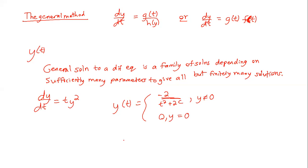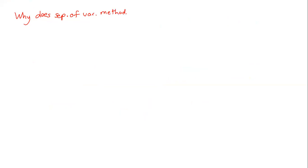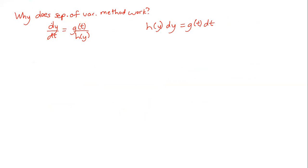You can also use a definite integral instead of an indefinite integral when you have data. Now let's address why the separation of variables method works, because some of the steps look questionable. It's fine to write the differential equation, but doing the step where you write h(y) dy = g(t) dt — as if dy/dt is a fraction you can just split up — seems problematic. Why is that step valid?